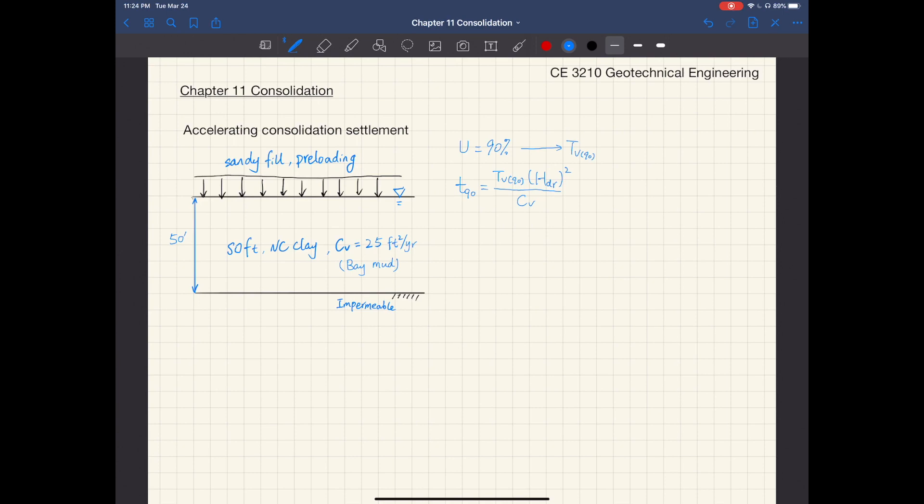We have also talked about how to estimate the time it takes for soil to consolidate. So let's use this example here to do some quick calculations. As shown on this graph here, we have 50 feet of soft normally consolidated clay layer.